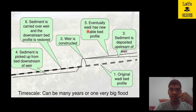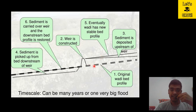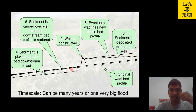Eventually, the wadi achieves a new stable bed profile. Accumulation is happening upstream, but after some time a state is reached where the stable bed profile is achieved. When this stable bed profile is achieved, sediments are also overflowing through the weir. In that case, sediment is carried over the weir and the downstream bed profile is restored as sediment flowing through the weir settles down in the downstream.